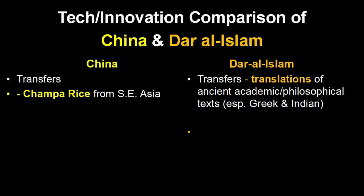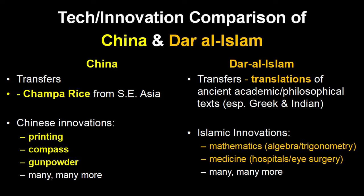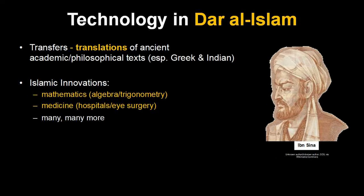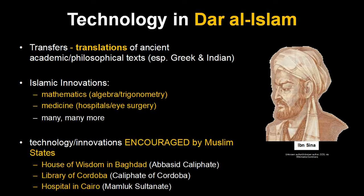In the Islamic world, they're doing two main things: transfers and innovations. Transfers means they're adopting other people's stuff — they especially liked ancient Greece, ancient India, and ancient Persia, and they're translating works into Arabic and Persian. They're also combining all of this knowledge and coming up with their own innovations: innovations in mathematics, medicine, literature, and many more. Much of this innovation is possible because of the involvement of Muslim states like the Abbasid Caliphate, which built the House of Wisdom in Baghdad.